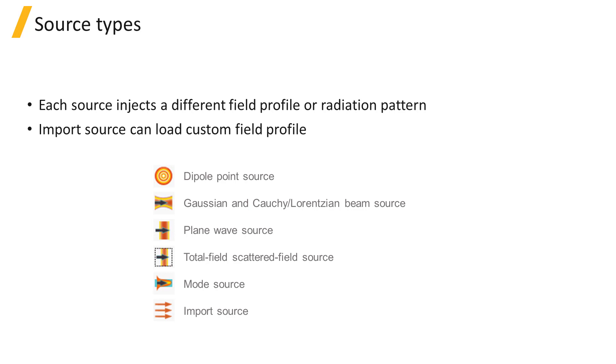The type of source to choose for a given simulation will depend on the experimental setup that you want to replicate, or the result that you want to measure from the simulation. For example, a laser source which has a Gaussian beam profile used in an experiment can be represented by a Gaussian source. A point source can be represented using dipole sources. And the supported mode of a waveguide or fiber can be injected using a mode source.